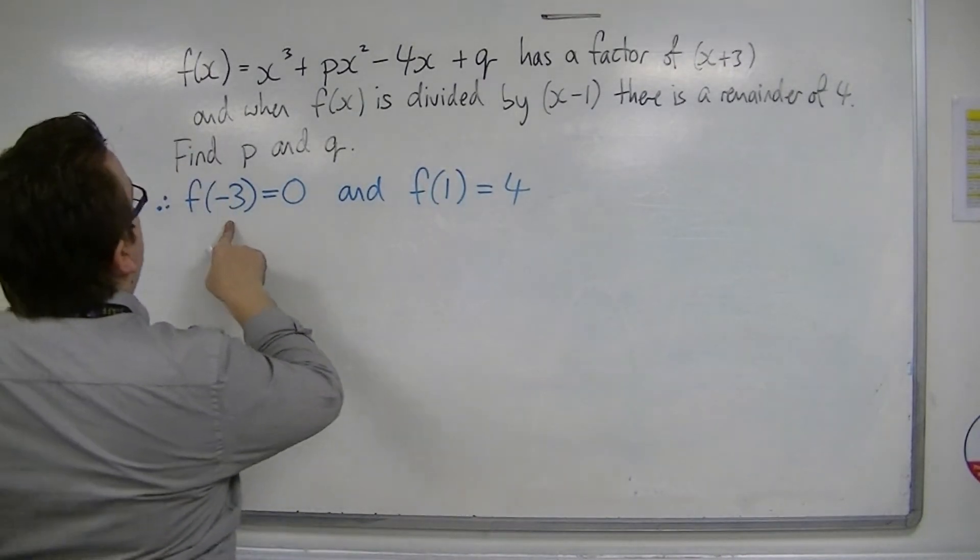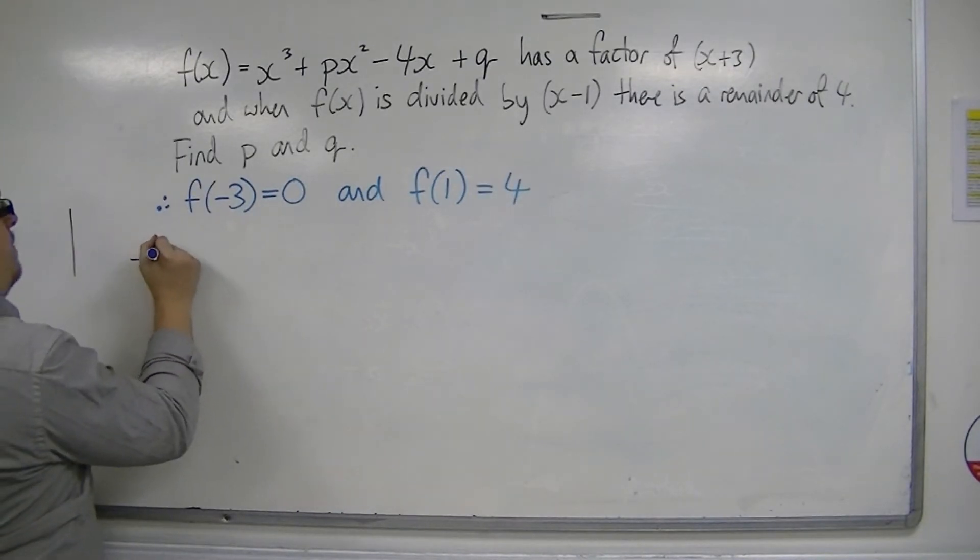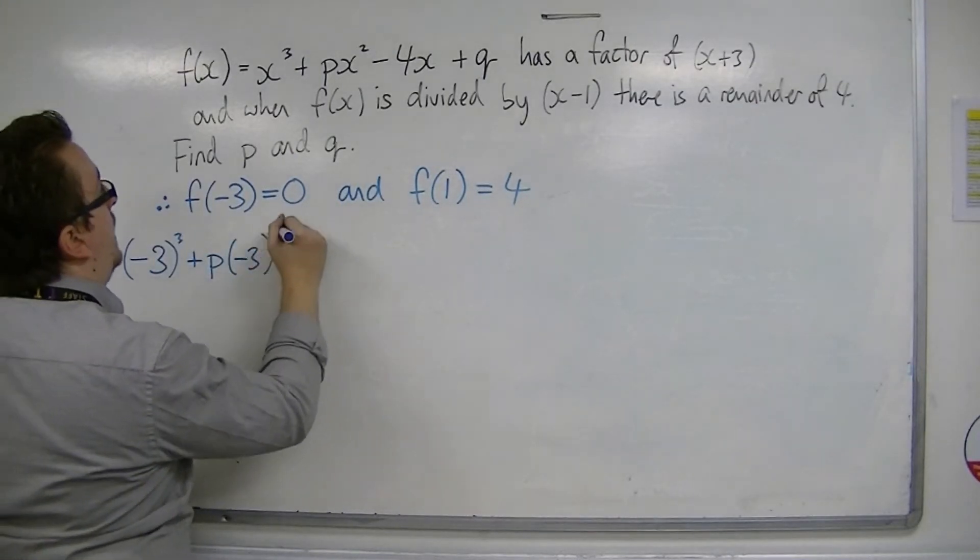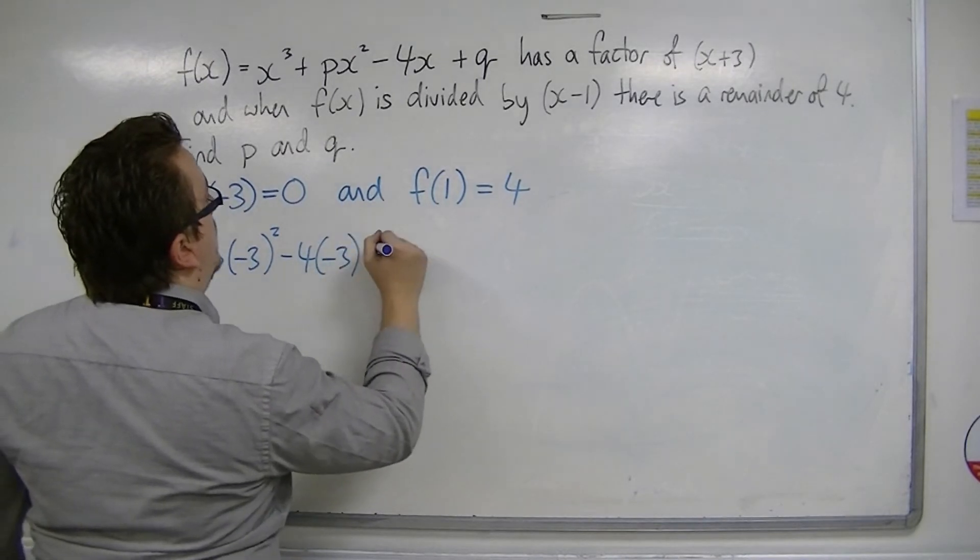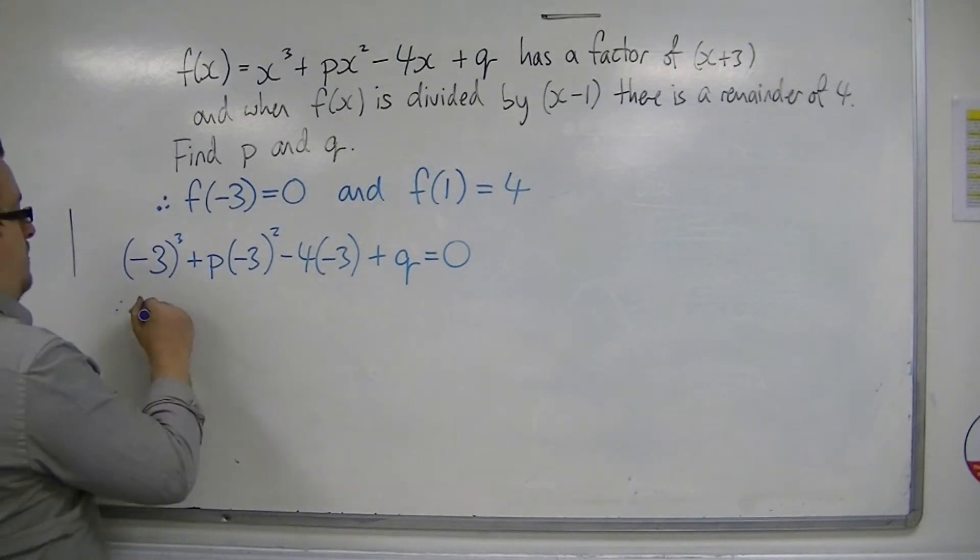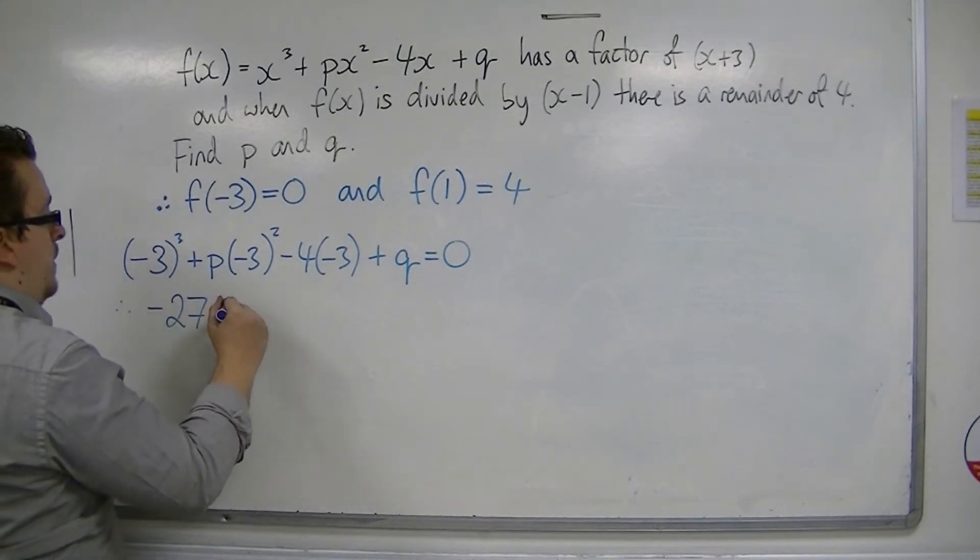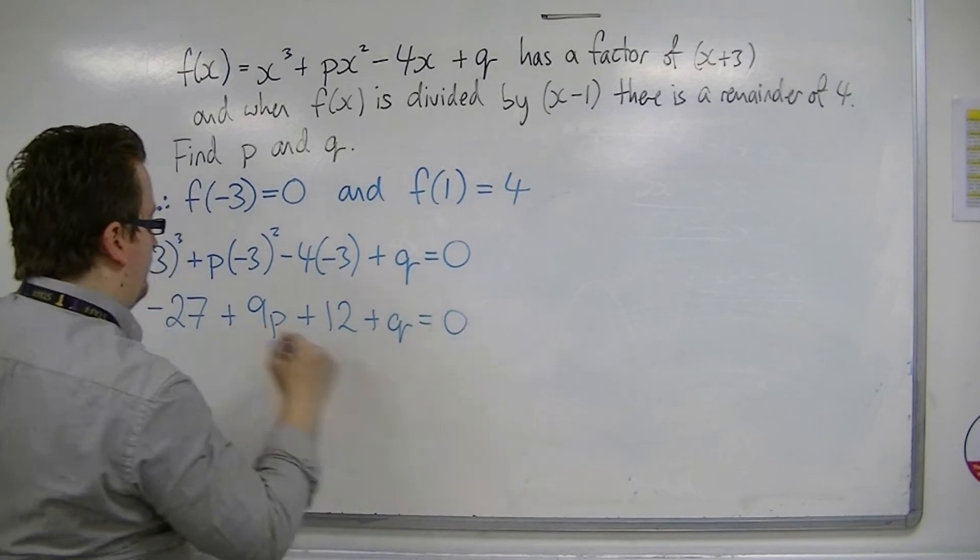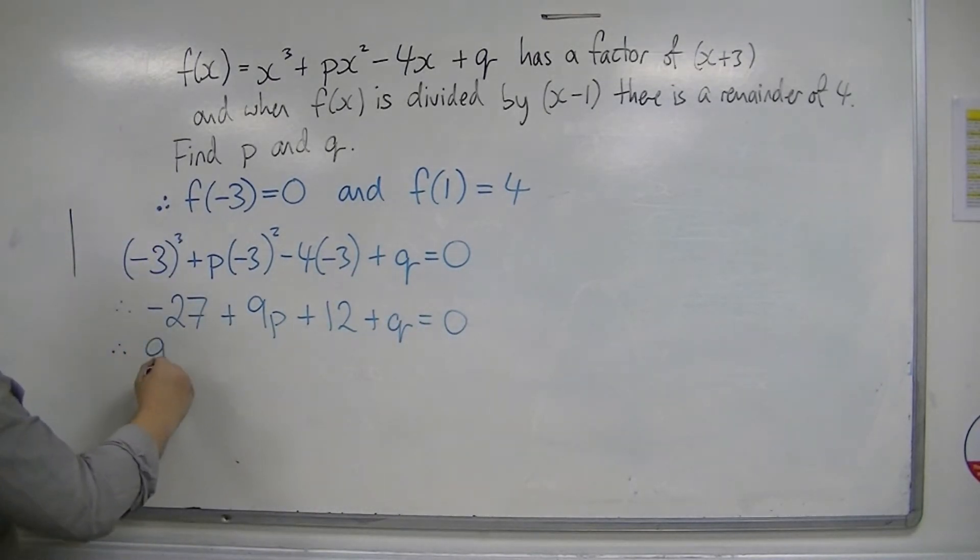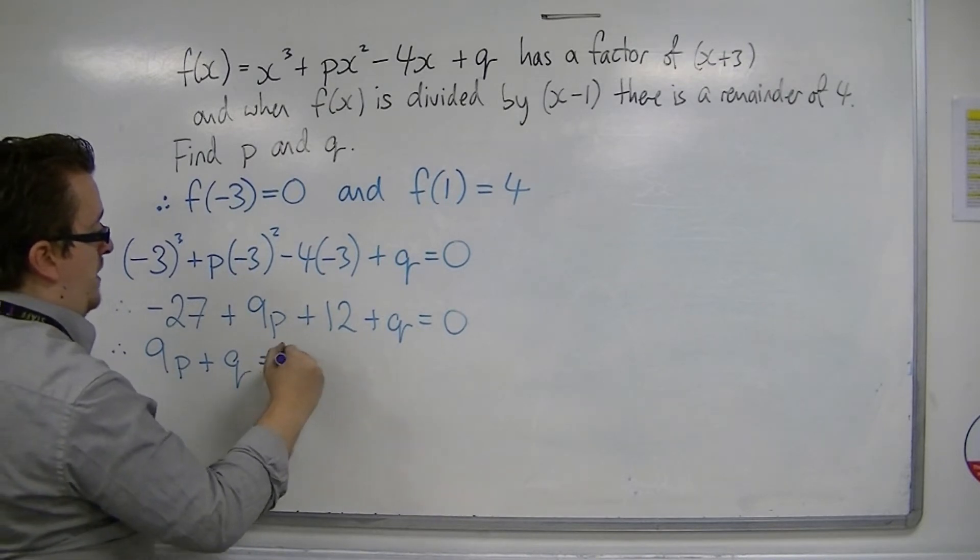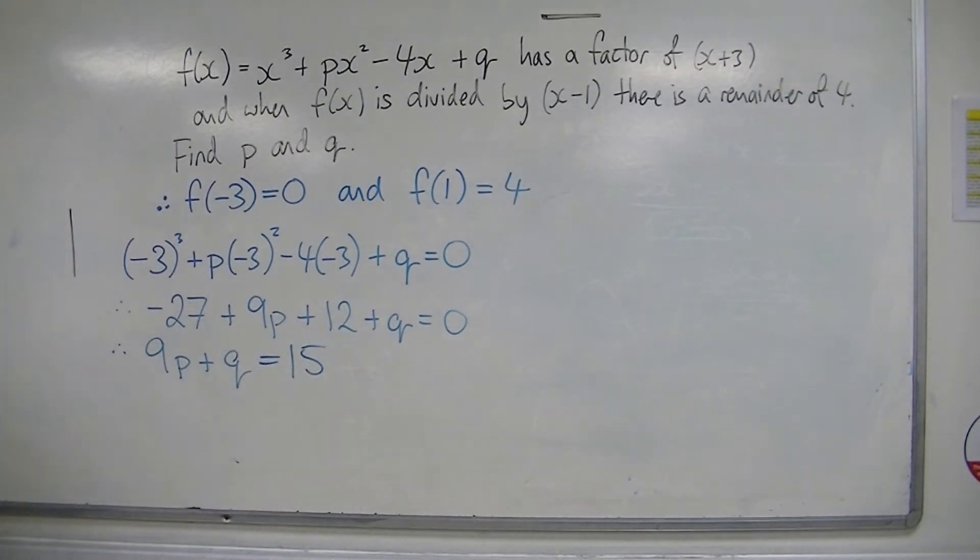So when we substitute minus 3, we should get 0. So we get minus 3 cubed plus p lots of minus 3 squared, take away 4 lots of minus 3, plus q is 0. Therefore, we have minus 27 plus 9p plus 12 plus q is 0. So we get minus 15, so we can add 15 to both sides, and we get 9p plus q is 15.